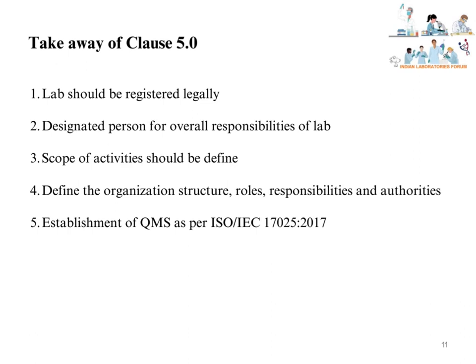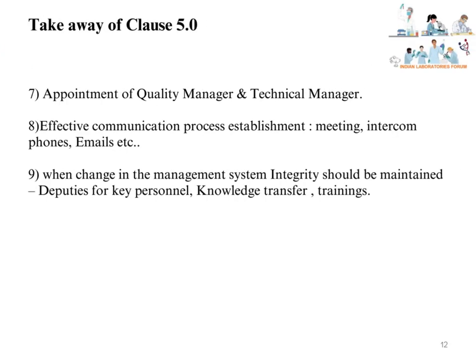Takeaways from Clause 5.0 of ISO IEC 17025:2017: The lab should be registered legally. The lab should have a designated person for overall responsibilities. The scope of activities should be defined. The organization's structure, roles, responsibilities, and authorities should be defined. Establish a QMS as per ISO IEC 17025:2017. The laboratory should appoint a quality manager for management system implementation and a technical manager for technical operations. Effective communication processes should be established through meetings, intercom phones, emails, etc. When there is a change in the management system, integrity should be maintained — for example, by having a deputy to key personnel.